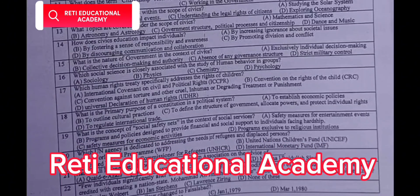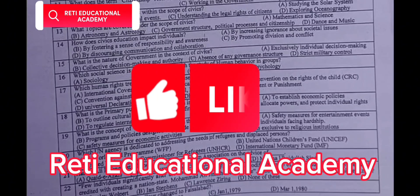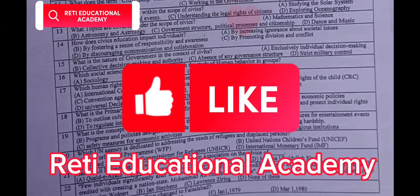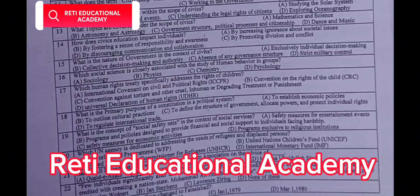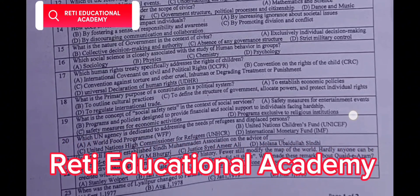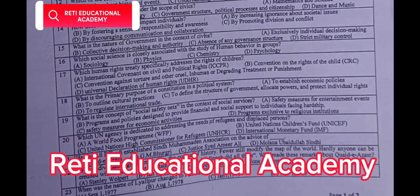Question number 15: What is the nature of government in the context of civics? A. Exclusively individual decision making. B. Collective decision making and authority. C. Absence of any governance structure. D. Strict military control. The correct answer is B: Collective decision making and authority.